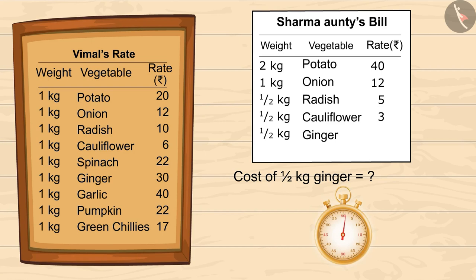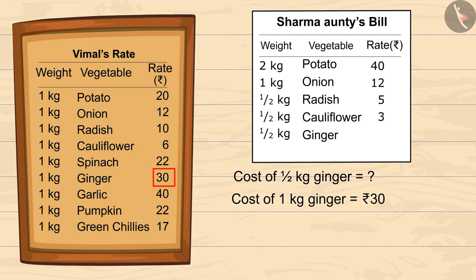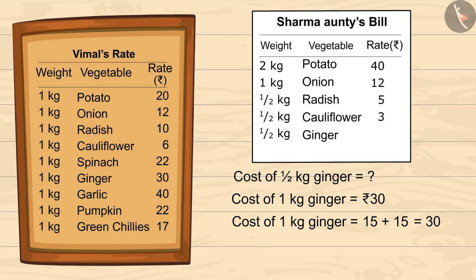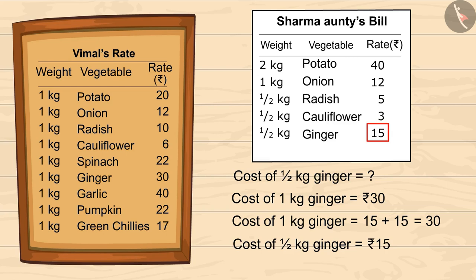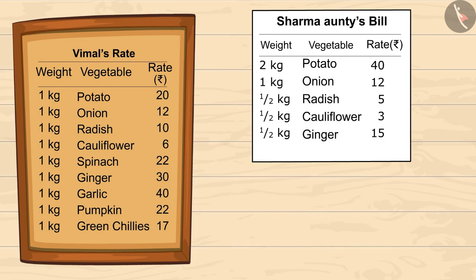Now we are left with half a kg ginger. 1 kg ginger costs 30 rupees, so half a kg ginger will cost half of 30 rupees. On dividing 30 into 2 equal halves we get 15, so half a kg ginger will cost 15 rupees. This is the cost of shopping done by Sharma auntie. Now let's add all of this to find out the total price.